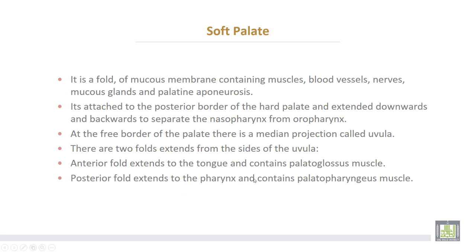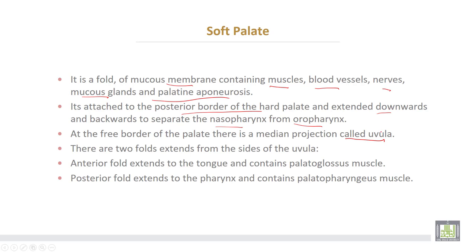The soft palate is a fold of mucous membrane containing muscles, blood vessels, nerves, mucous glands, and the palatine aponeurosis. It is attached to the posterior border of the hard palate and extends downwards and backwards to separate the nasopharynx from the oropharynx. At the free border of the soft palate, there is a median projection called the uvula of the soft palate.